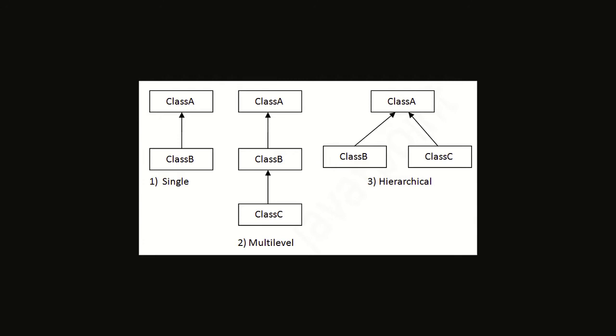So class C is also having class A's properties and methods — this is called multi-level inheritance. In the third part we have hierarchical inheritance, where class B extends class A and class C also extends class A. So both classes will extend class A. This is hierarchical inheritance — also a type of single inheritance, but here two classes extend the same class.